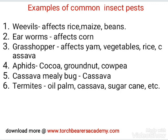Examples of boring insects include stem borers and weevils. Looking at common insect pests, weevils affect rice, maize, and beans — we have rice weevils, maize weevils, and bean weevils. Earworms are found in corn; when you open corn rows you may find these worm-like insects inside. Grasshoppers are usually found on vegetables; the caterpillar is the larval form, and grasshoppers feed on yam, vegetables, rice, and cassava.